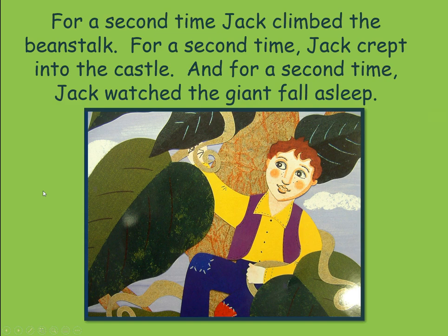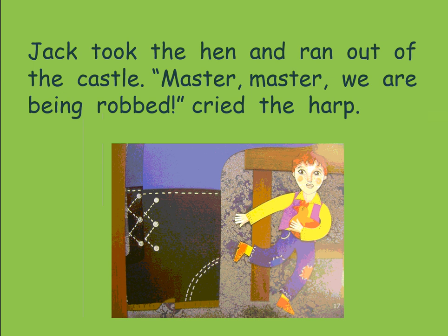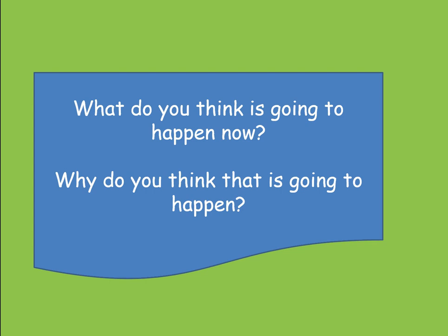For a second time — let's see if you're right. Jack climbed the beanstalk. For a second time, Jack crept into the castle. And for a second time, Jack watched the giant fall asleep. Jack took the hen and ran out of the castle. 'Master, master, we have been robbed,' cried the harp. So, your second pause now — what do you think is going to happen now? Why do you think that's going to happen? Grown-ups, when you're ready, start the video again.